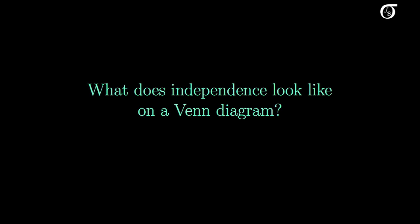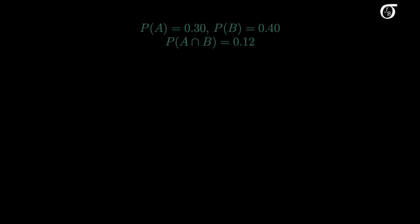I'm going to assume that you've already been introduced to the concept of independent events in probability. Let's start with an example. Suppose we have a situation where the probability of A is 0.3, the probability of B is 0.4, and the probability of their intersection is 0.12. Since the product of the individual probabilities is equal to the probability of the intersection, A and B are independent.